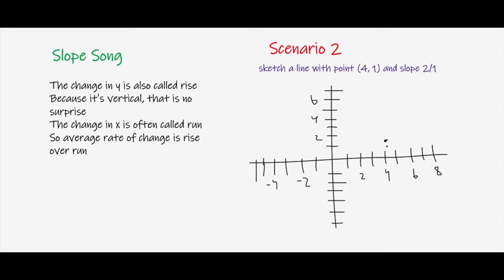Now the next thing we have to do is find the slope. So here we can use our song, which is the change in y is also called rise because it's vertical. That is no surprise. The change in x is also called run. So average rate of change is rise over run.